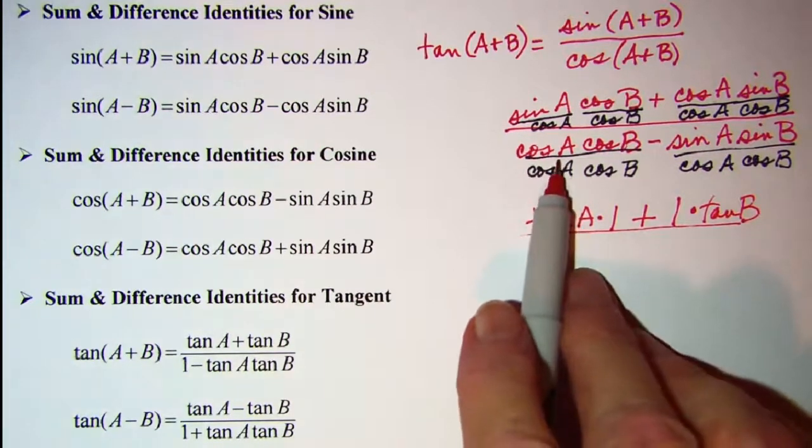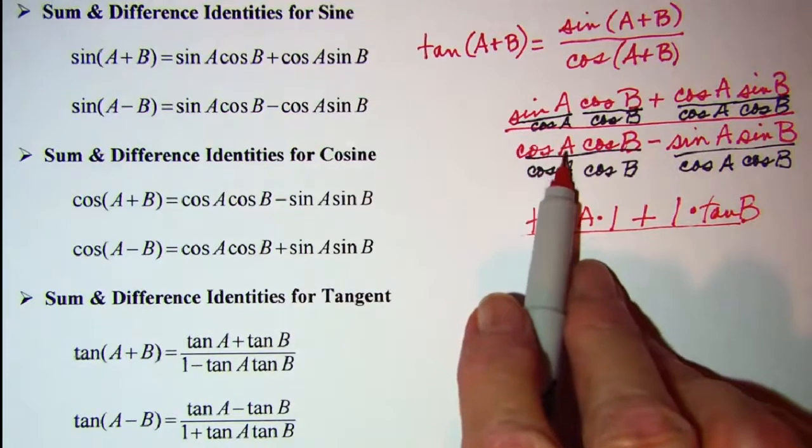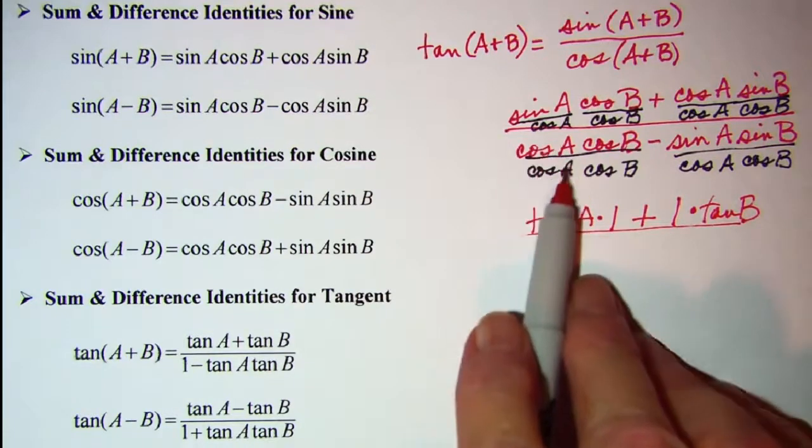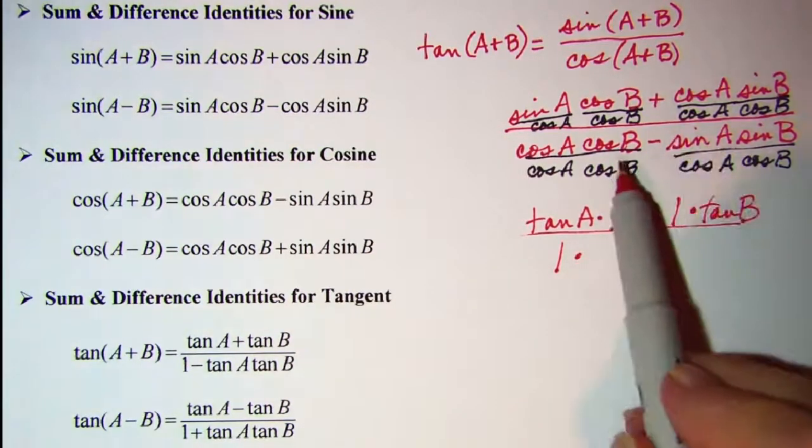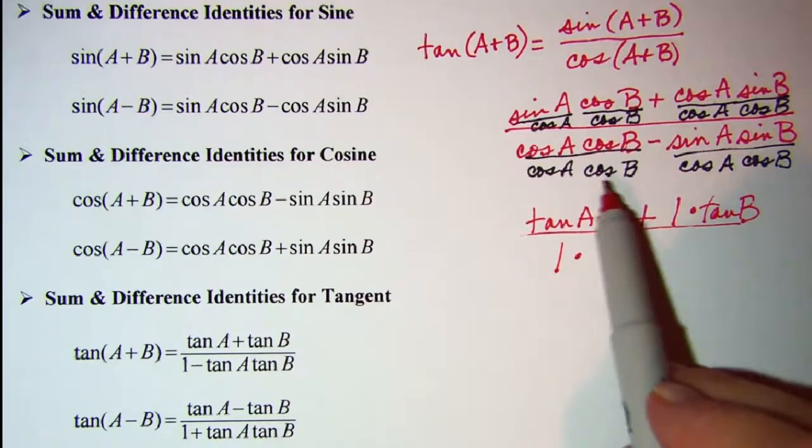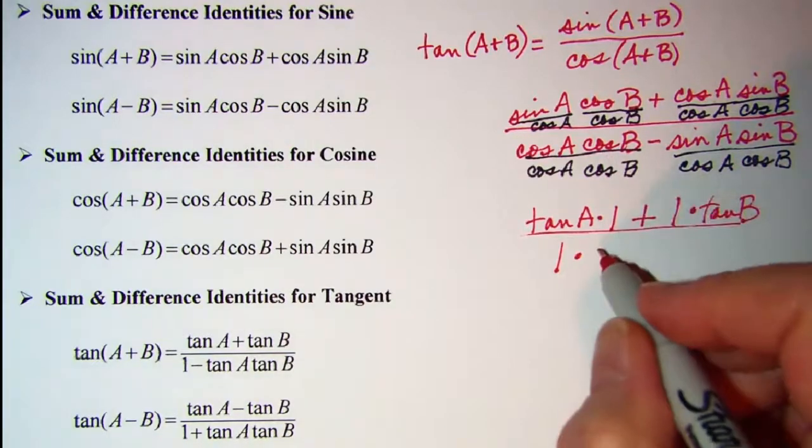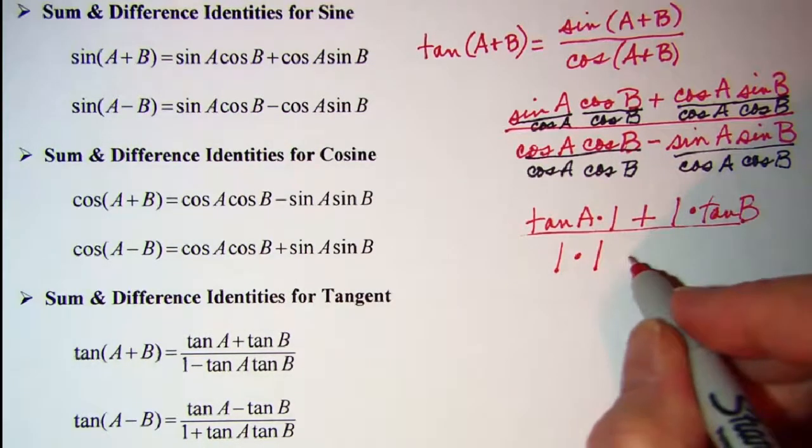And then in the denominator, this first fraction, cosine A over cosine A, that's one. Times, and then cosine B over cosine B, that's also one.